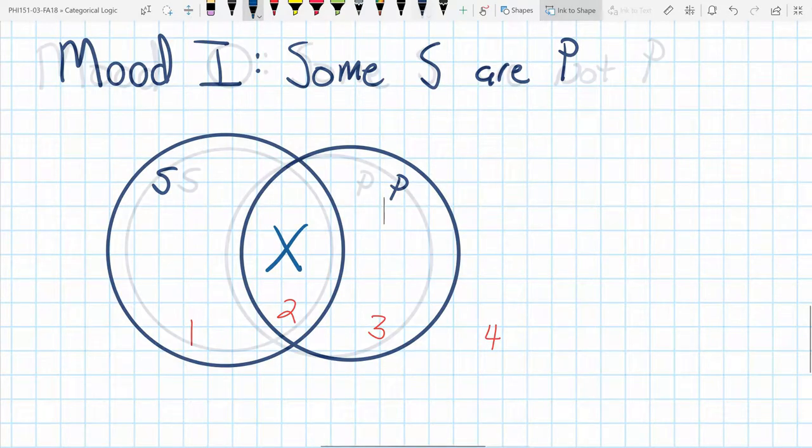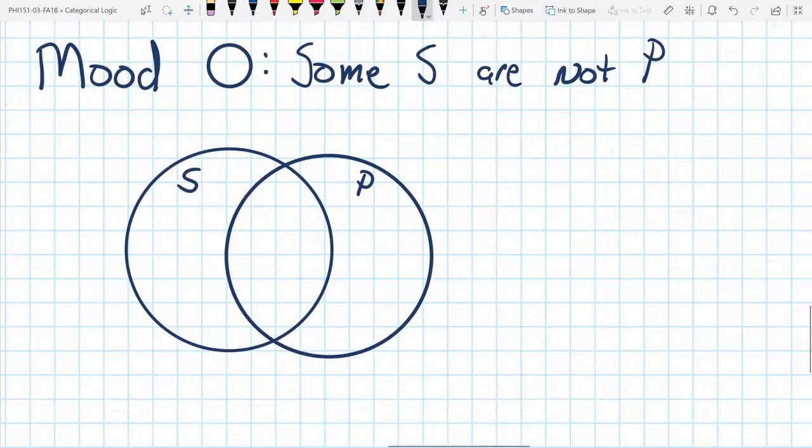Finally, let's look at mood O. Mood O says that there are some S's that are not P, or there's at least one. And we're talking about at least one. We're talking about something particular, not universal. We don't shade out an entire region. Instead, we place an X. And so that would go in region one. And we would leave nothing in region two, three, or four. So this statement claims that there's at least one thing within the group of S that is also not in the set of P things. So again, we use an X. We place it in region one.